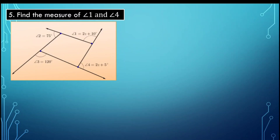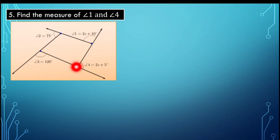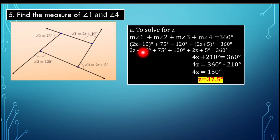Now let's have number 5: find the measure of angle 1 and the measure of angle 4. This involves the exterior angle theorem of quadrilaterals. Given: the measure of angle 1 is 2Z plus 10, angle 2 is 75, angle 3 is 120, and angle 4 is 2Z plus 5. The equation is: the measure of angle 1 plus angle 2 plus angle 3 plus angle 4 equals 360 degrees. Substituting: (2Z + 10) + 75 + 120 + (2Z + 5) = 360 degrees.